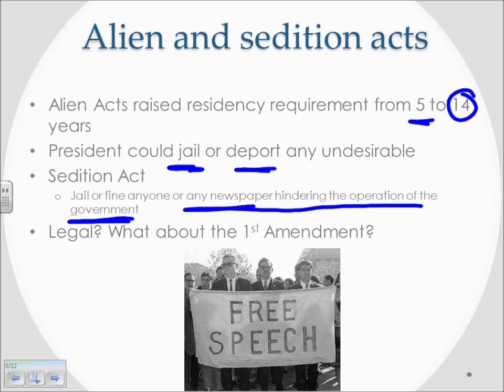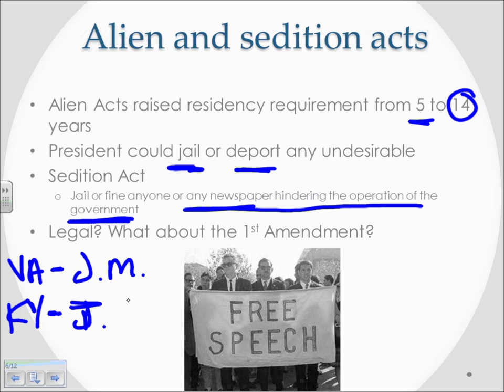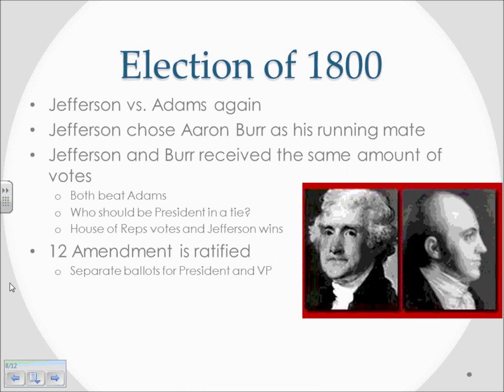Republicans saw the Alien and Sedition Acts as an attack on them, on liberty, and on their supporters. They drafted the Virginia and Kentucky Resolutions — state declarations to combat these actions. Virginia's resolution was drafted by James Madison and Kentucky's by Thomas Jefferson. Keep in mind the Federalist point of view though: they wanted to prevent war and prevent a rift from growing in America. The Alien and Sedition Acts were put in place essentially to prevent radicals from causing a civil war, so don't lose sight of their argument as well.